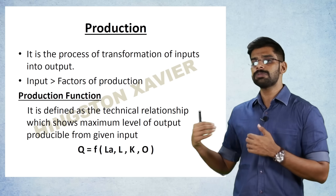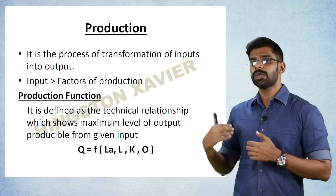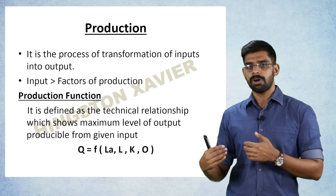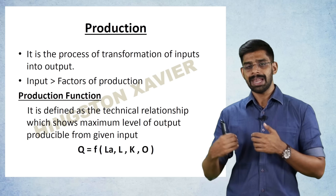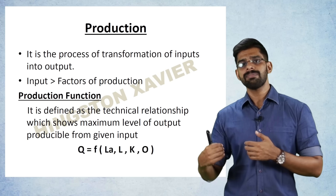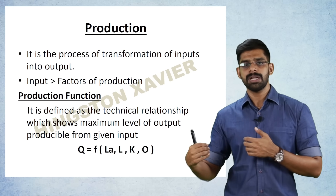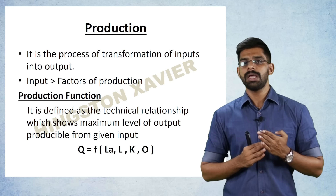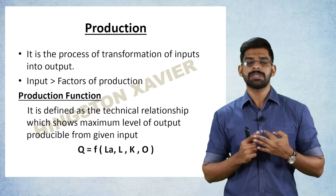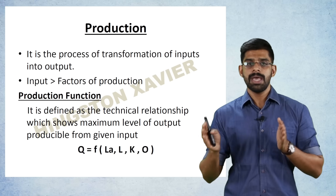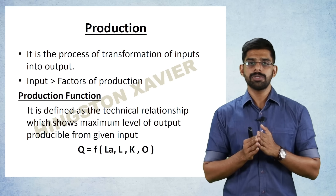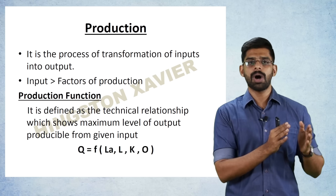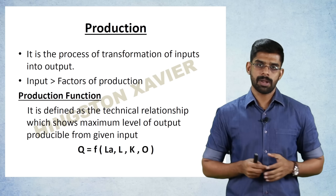The production function is referred to as Q as a function. Q is equal to function of Land (LA), Labour (L), Capital (K), and Organization (O) — four factors. Land, labour, capital and organization. Q represents the maximum quantity, that is the total production.